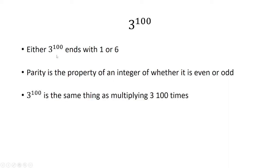Here we have 3 to the 100th power. That's the same thing as multiplying 3 one hundred times. In other words, we're multiplying odd numbers. Whenever you multiply 2 odd numbers, you get an odd number. So when you keep multiplying by odd numbers, you end up with an odd number.